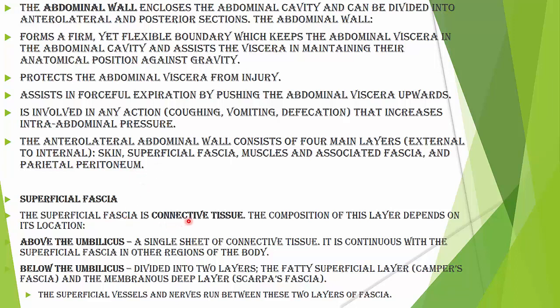The composition of layers of the anterior lateral abdominal wall depends on its location. Above the umbilicus, a single sheet of connective tissue is continuous with the superficial fascia in other regions of the body. Below the umbilicus, it is divided into two layers: the fatty superficial layer known as Camper's fascia, and the membranous deep layer known as Scarpa's fascia. The superficial vessels and nerves run between these two layers of fascia.